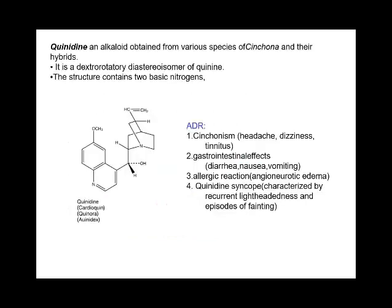The first Class 1A drug is quinidine. It is an alkaloid compound obtained from the cinchona plant — the same plant we discussed when talking about quinine as an anti-malarial drug. Quinidine and quinine are diastereomers of each other.